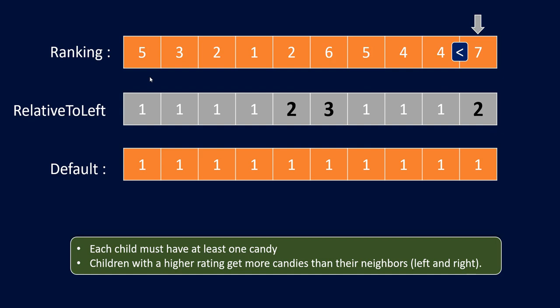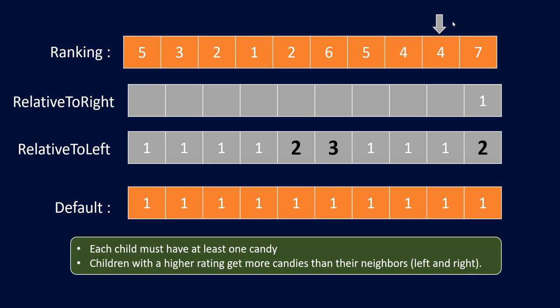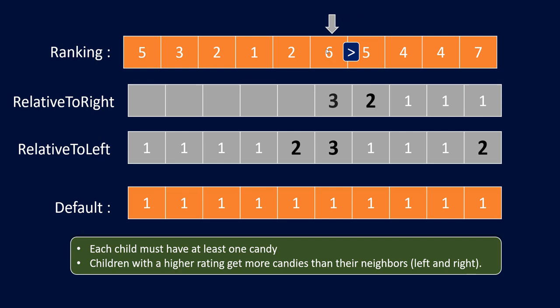Now we need to do the same considering the right neighbor also. We will start with the second-last person and find how many candies that person should get considering the right neighbor. We give one candy as a default to the last person and calculate candies for all other children. Since 4 is less than 7, we give one candy to this child. Since 5 is greater than 4, we need to give an extra candy from the right neighbor's count — so 1 plus 1 is 2. Since 2 is less than 6, we give one candy. We fill the array till the end and now we have two arrays: one with respect to left and the other with respect to right.